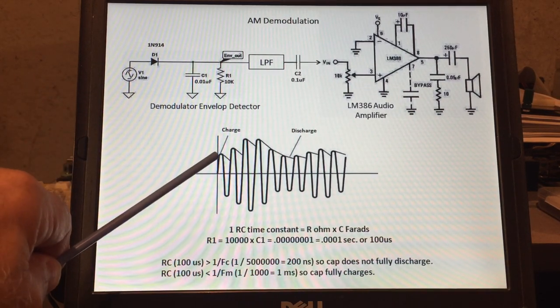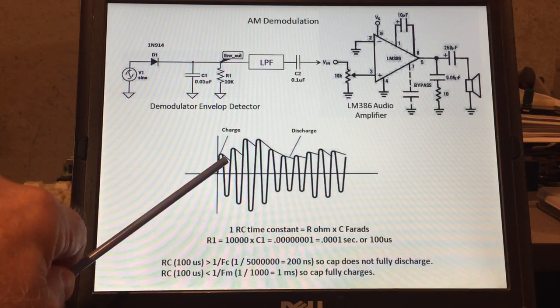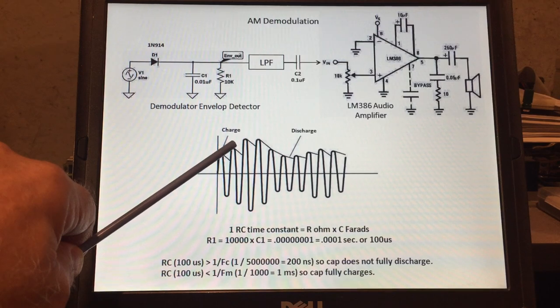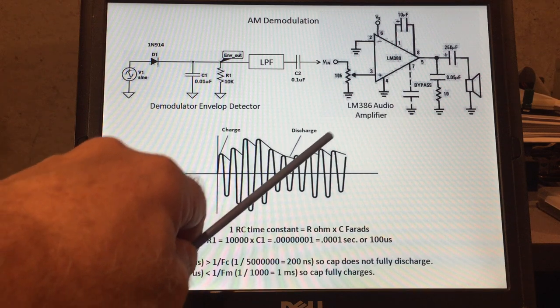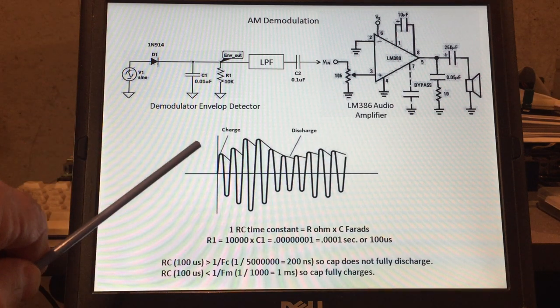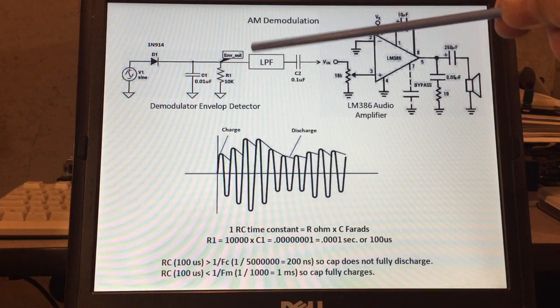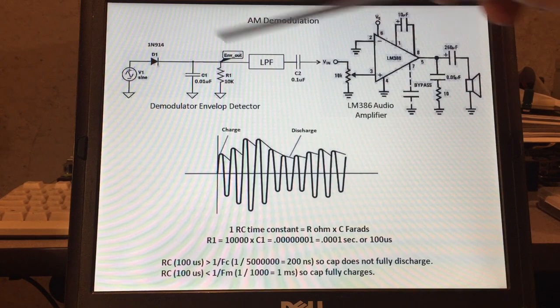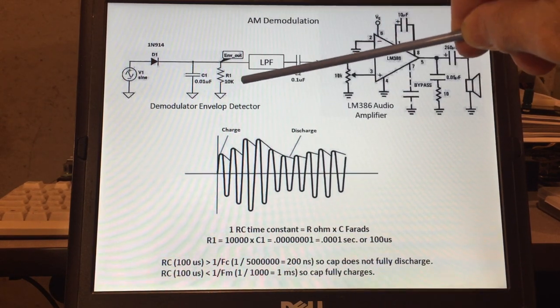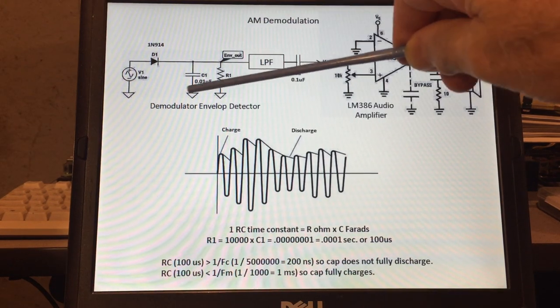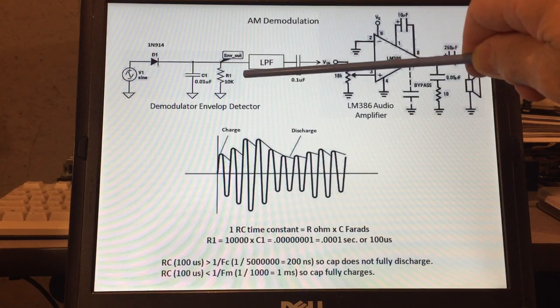So what we get here on the envelope is the capacitor charging and discharging and that cycle is just repeated. It charges and discharges, charges, discharges and gives us the envelope of the carrier wave. So these values are critical. We have basically a resistor and a capacitor and the charge and discharge time of the capacitor and that's controlled primarily by the value of capacitance and the resistance. We call that a time constant or tau.